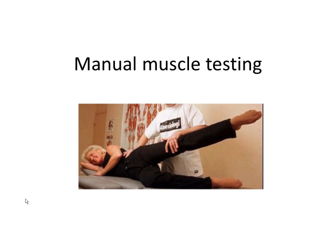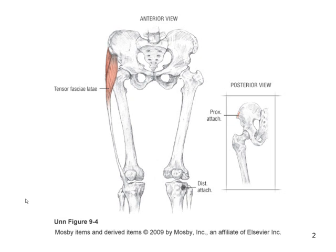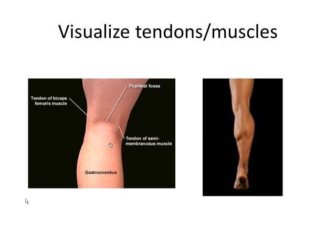You need to know a lot about muscles in order to accurately perform muscle testing: the attachment sites, the location of the muscle, the actions the muscle performs, and you need to be able to palpate and visualize the muscles and tendons. On the picture on the left, on the lateral aspect, you can see the tendon of the biceps femoris. On the medial side of the leg, you can see the tendon of the semitendinosus muscle — that was a typo in the slide.